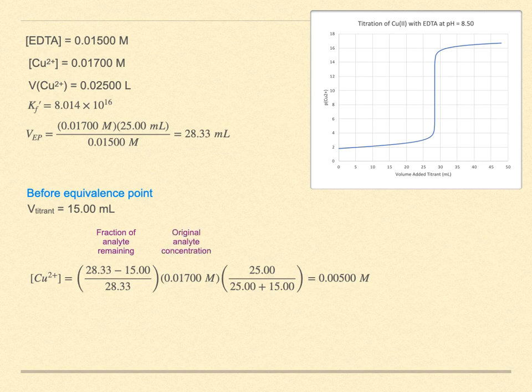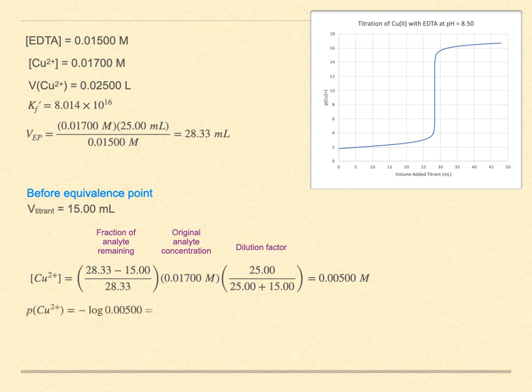The second is the original metal ion concentration. And the last term is just the dilution factor accounting for the increased solution volume due to the added titrant. In this case, the new copper ion concentration is 5 millimolar. To graph this, we want the p function of the ion concentration. We obtain p of copper 2 plus equals 2.301. Look at the graph, and you can see that it seems to make sense.